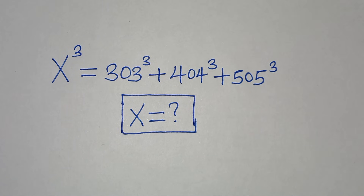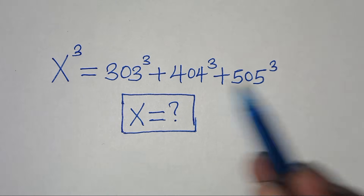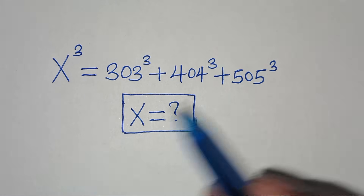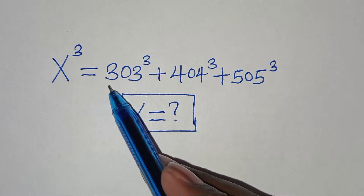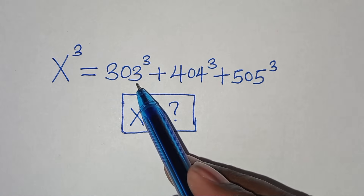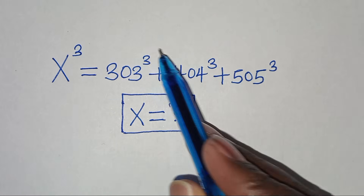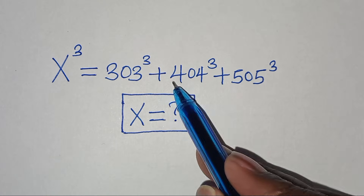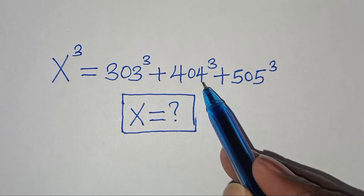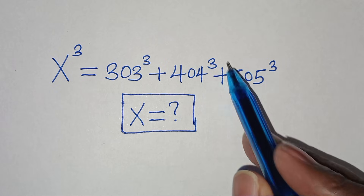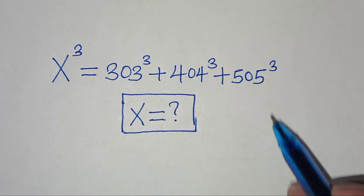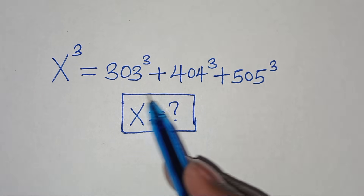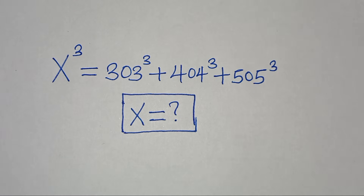Hello everyone, you are welcome to this nice algebra problem, which is x to the power of 3. This is equal to 33 to the power of 3, plus 44 to the power of 3, plus 55 to the power of 3. So find the value of x.